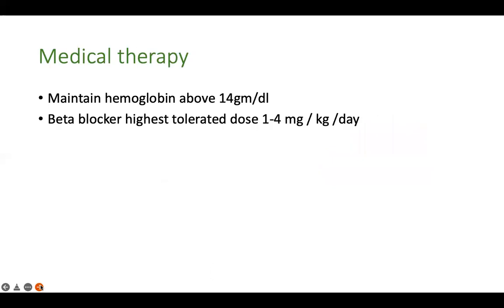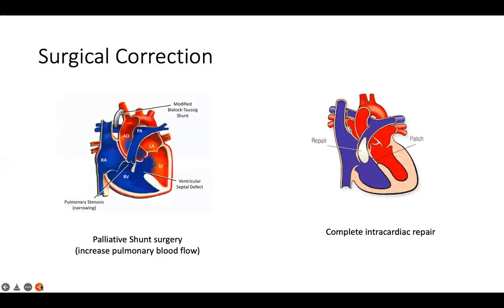For medical therapy to prevent cyanotic spells, maintain hemoglobin above 14 g/dL — anemia decreases RBC deformability and oxygen-carrying capacity. Also give a beta blocker at the highest tolerated dose of 1–4 mg/kg/day, which often prevents recurrent cyanotic spells. However, the ultimate intervention is surgery.